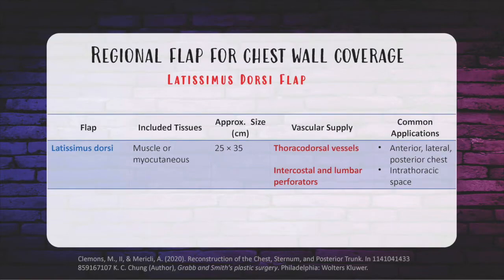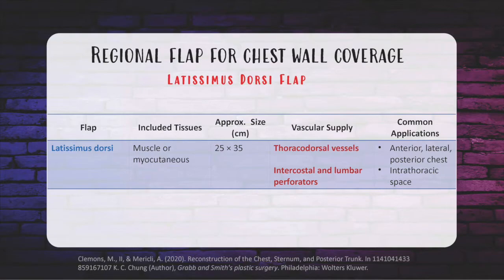The latissimus dorsi flap is Mathes and Nahai type 5 with a dominant and secondary pedicle. The dominant pedicle is the thoracodorsal artery, and the secondary is perforators from the posterior intercostals and lumbar artery. It is most commonly used for chest wall reconstruction and known for its bulk. The thoracodorsal artery is highly reliable with little anatomic variability, and multiple perforators allow customization of the skin island for many different types of chest wall defects. Specific indications include patients who are not candidates for the TRAM flap (e.g., prior abdominoplasty) and patients with a history of chest wall radiation, as the latissimus brings in new vascularized tissue from outside the radiation field. Contraindications include a history of posterolateral thoracotomy, which could have compromised the thoracodorsal artery or divided the latissimus muscle.